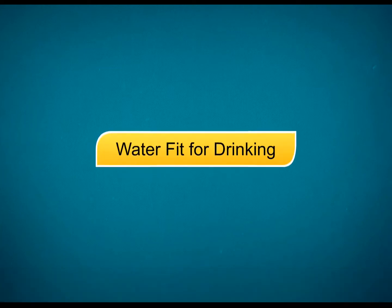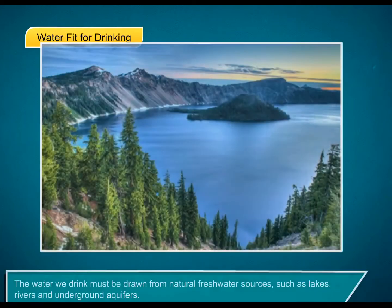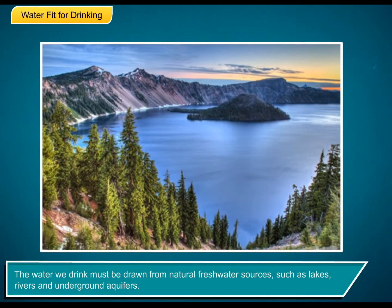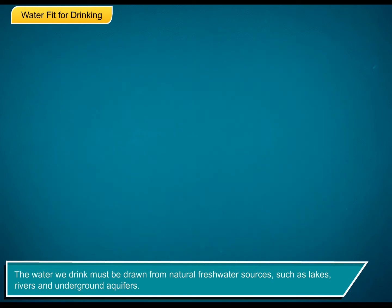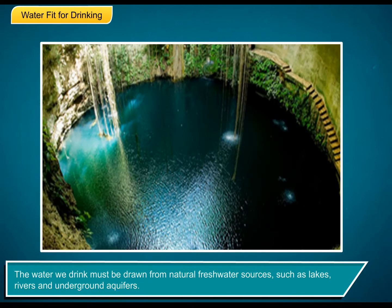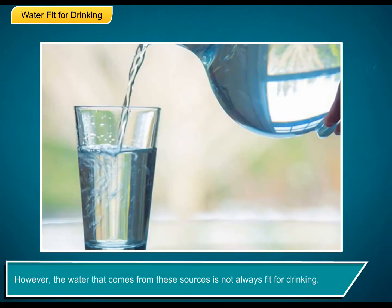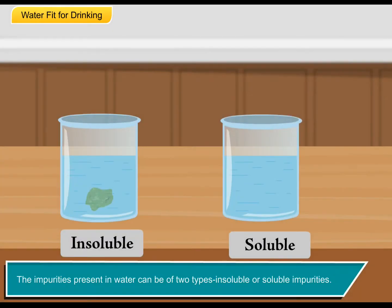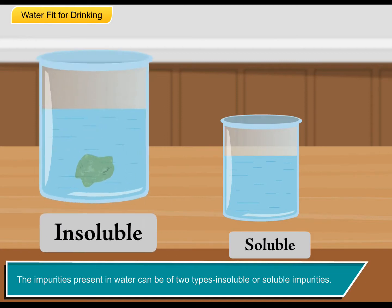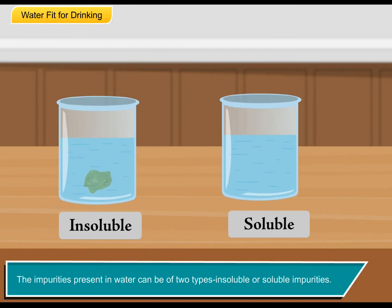Water fit for drinking. The water we drink must be drawn from natural freshwater sources such as lakes, rivers, and underground aquifers. However, the water that comes from these sources is not always fit for drinking. The impurities present in water can be of two types: insoluble or soluble impurities.